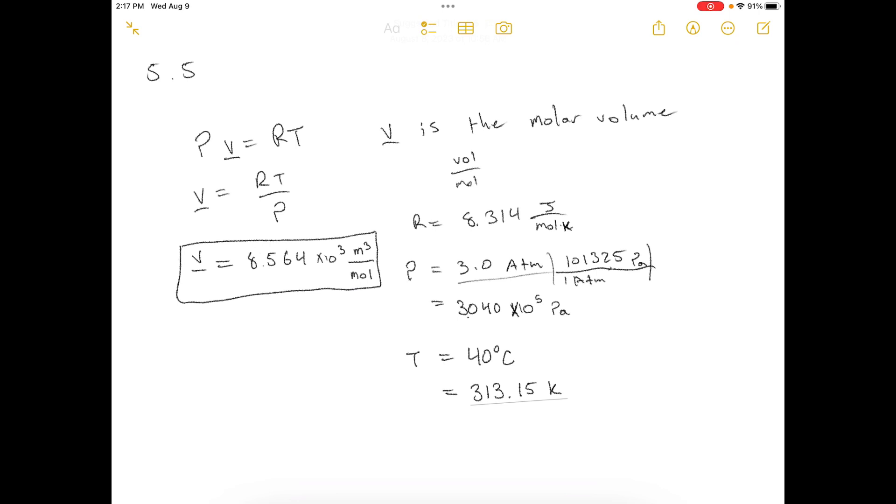and the density of air in kilograms per meter cubed at 40 degrees Celsius and a gauge pressure of 3 atmospheres.